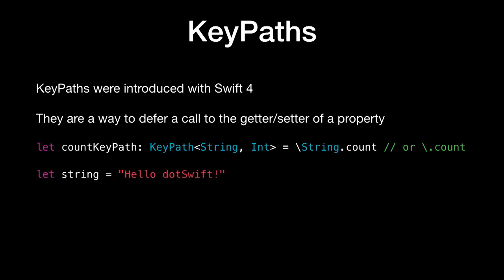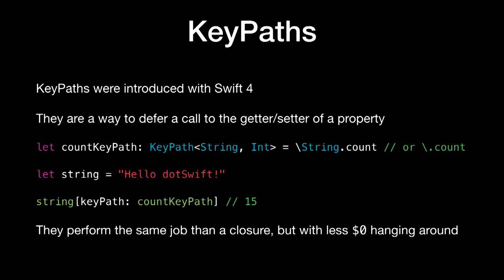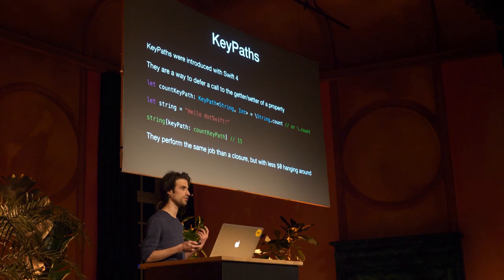So how do you use it? Let's take a string — we're going to invoke the KeyPath on it with this syntax which is very close to a dictionary, and we get the value of the count which is 15. Basically you can see that they perform the same job as a getter or setter closure, just with much less curly braces and dollar-zeros hanging around your code.